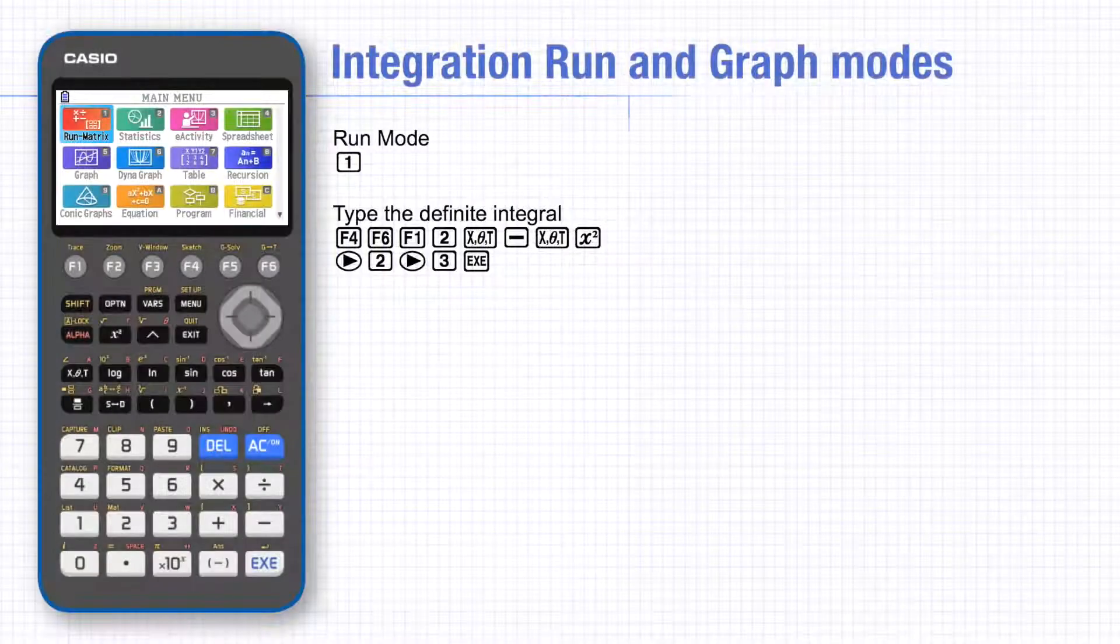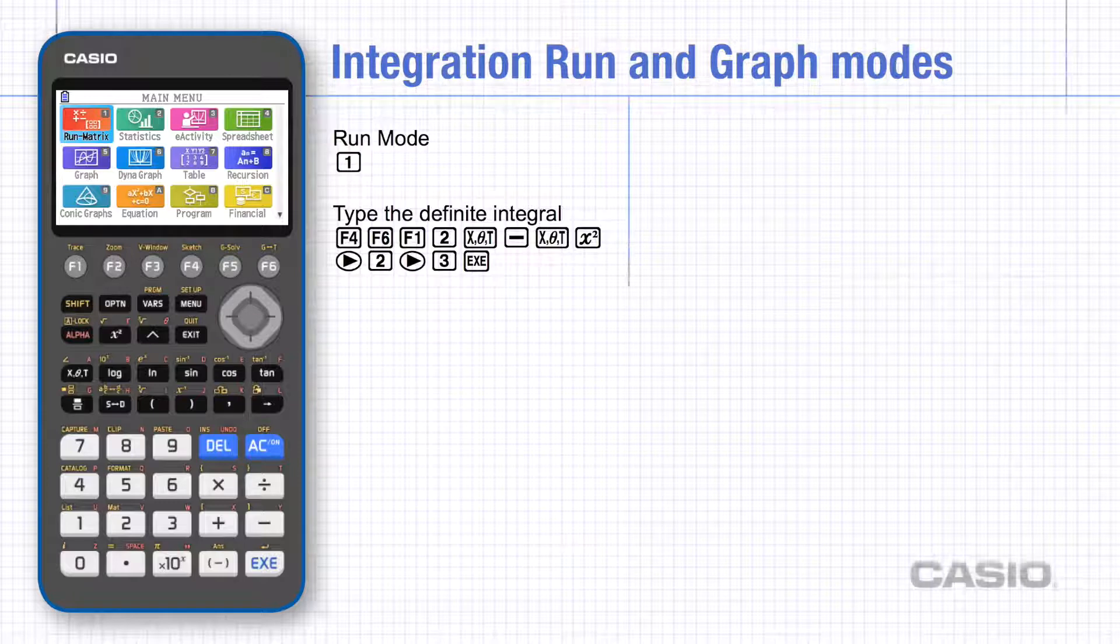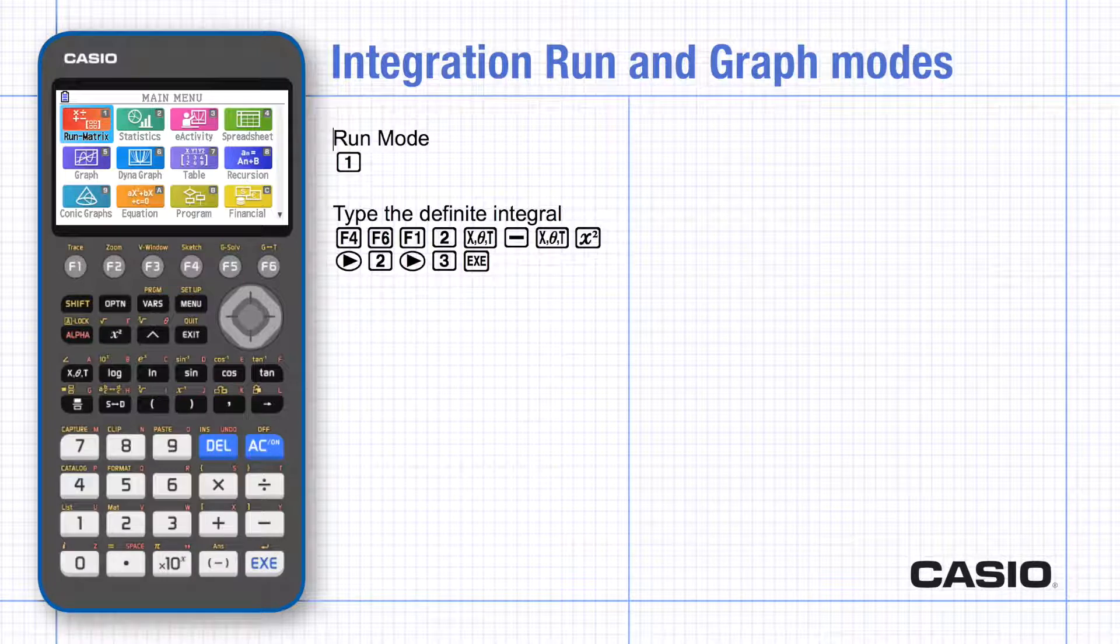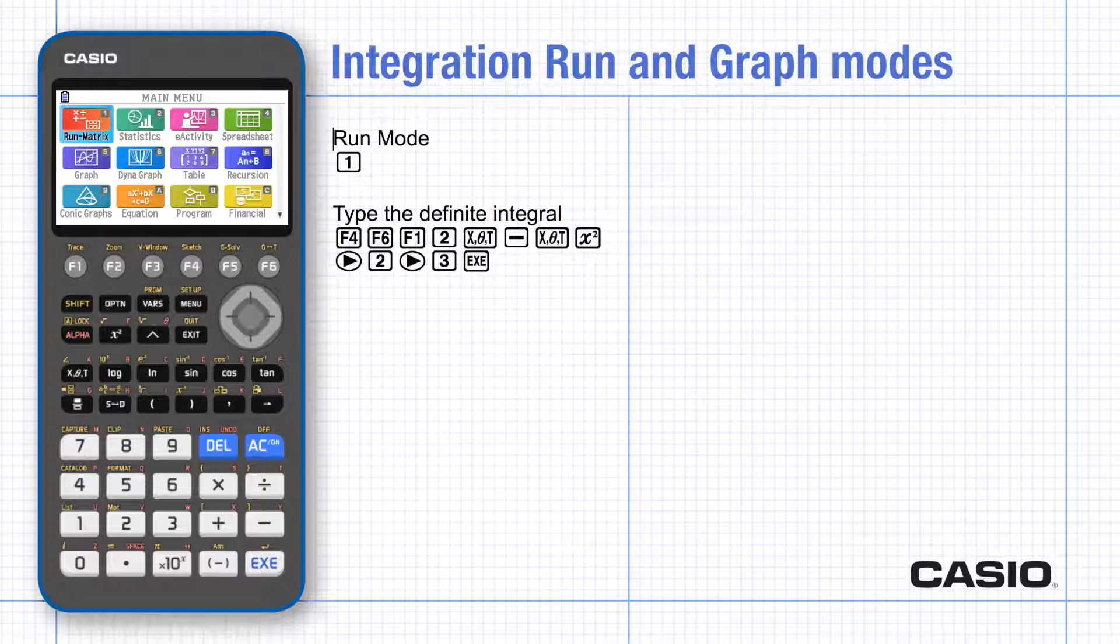In this tutorial we'll be looking at finding definite integrals and finding the area under a graph. In run mode you can type in a definite integral. In graph mode you can not only evaluate the area but see it on the graph.